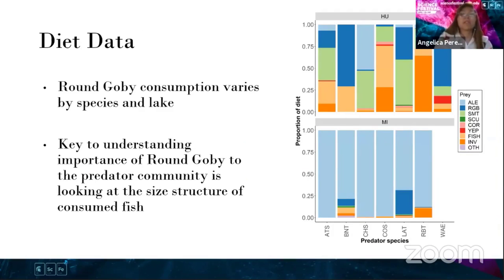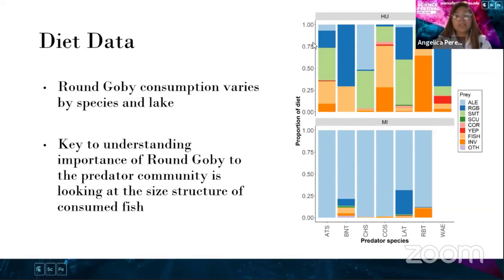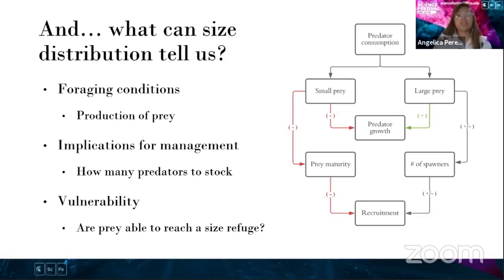In our diet study, we have found that round goby consumption varies by species and by lake. On the figure showing proportion of diets measured in wet weight by predator species, round goby can be recognized by the dark blue bars. We see that for brown trout and for walleye, round gobies make a large proportion of their diets in Lake Huron. The key to understanding the importance of round goby to the predator community is looking at the size structure of consumed fish.